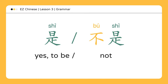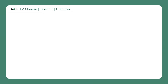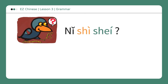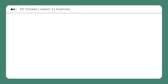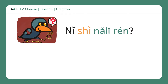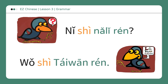The negative form is 不是. 你是谁? Who are you? 我是莉莉。 I am Lily. 你是哪里人? Where are you from? 我是台湾人。 I am Taiwanese.